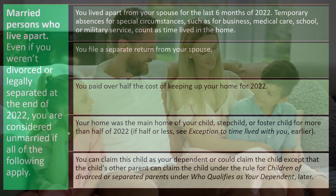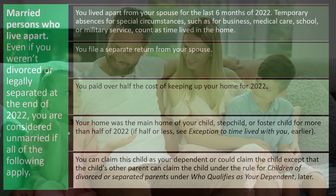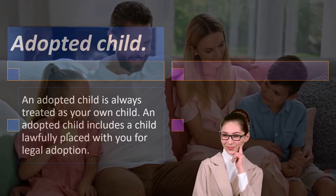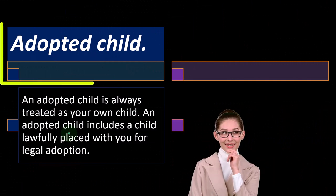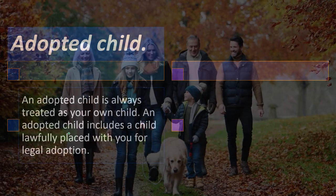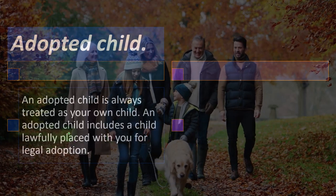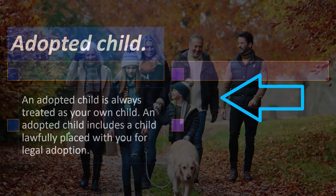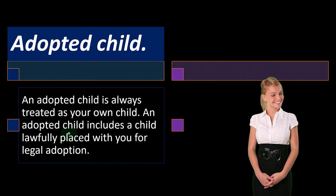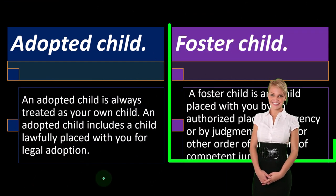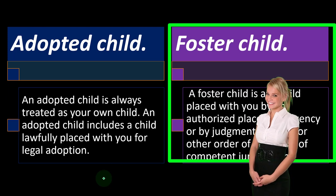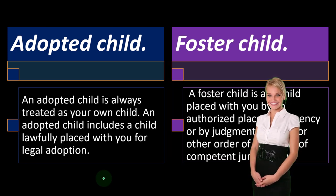There are caveats around custody issues with a child in a separation situation, with more rules to be covered in a future presentation. An adopted child is always treated as your own child — straightforward except possibly in the year of adoption. An adopted child includes a child lawfully placed with you for legal adoption. A foster child is any child placed with you by an authorized placement agency or by judgment, decree, or other order of any court of competent jurisdiction.